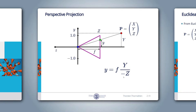Our derivation in the Y-Z plane can also be applied in the X-Z plane and we get the same result. The X-coordinate in the image plane equals the focal length times X divided by Z. These two equations for the X- and Y-coordinate of a two-dimensional projected point are rather simple. However, in the OpenGL pipeline, we are not only interested in the X- and Y-coordinate, but we also need a Z-coordinate to perform the depth test.